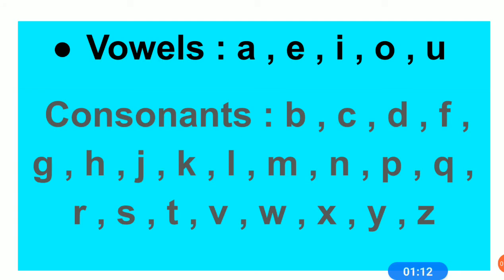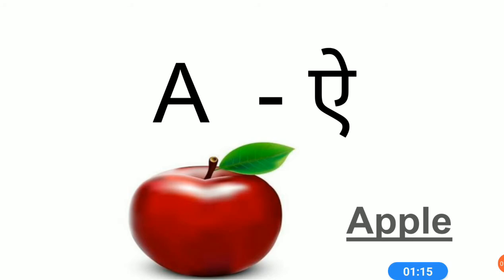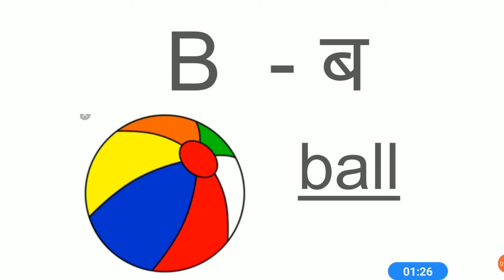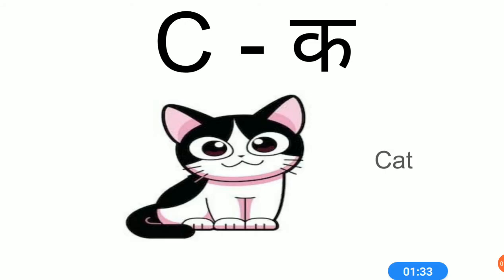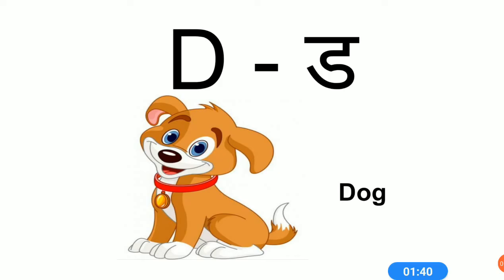Now let's see the alphabet sound. The first letter is A. A sound is A. A for apple. B sound is B. B for ball. C sound is C. C for cat. D sound is D. D for dog.